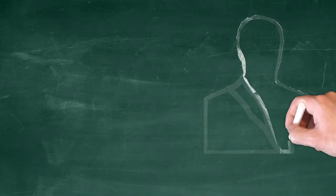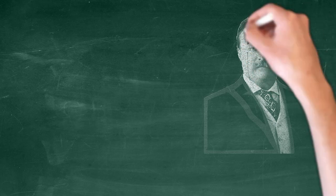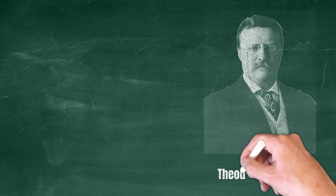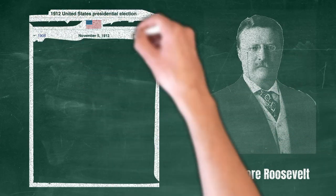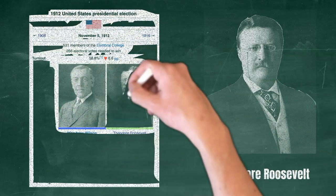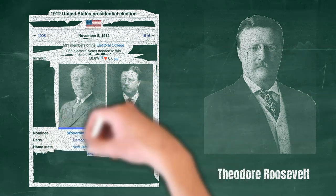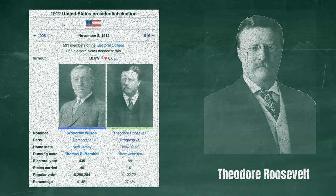Otherwise, you guessed it, they will help someone much further away from them in their ideological preference. It is not a coincidence that the third-party candidate who got the closest to winning was Theodore Roosevelt in 1912, and yet a man usually ranked in the top five presidents of all time could barely manage a third of the votes needed to win the Electoral College.